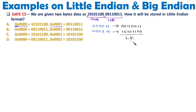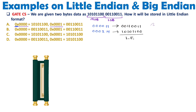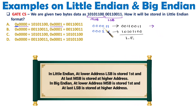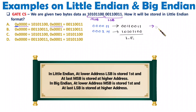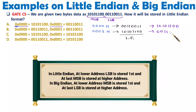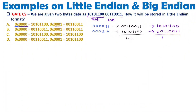If the same question were for big-endian, remember one thing: when you store data, first you store the MSB. At the lower address, you store the higher byte, and at the higher address, you store the lower byte. So in big-endian, at the lower address you first store the higher byte, which is 10101100, and at the higher address you store the lower byte, which is 00110011. That is how you store data in big-endian.